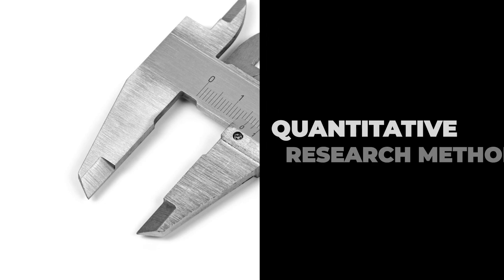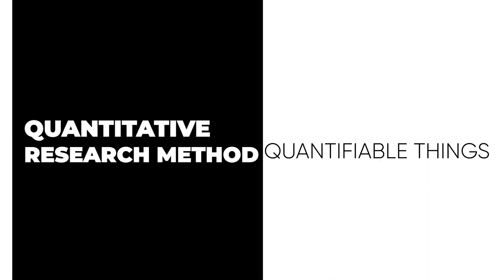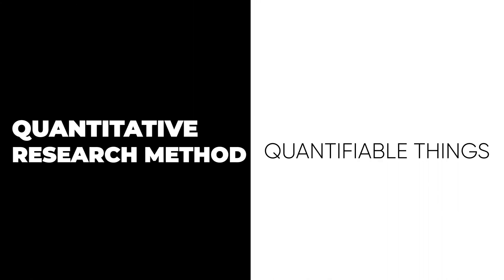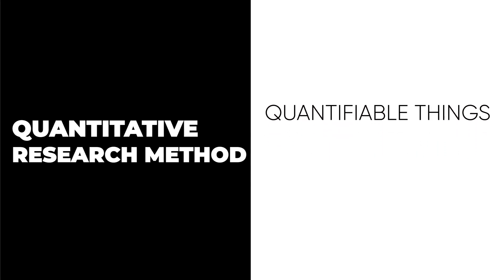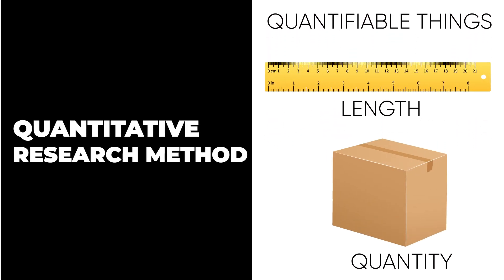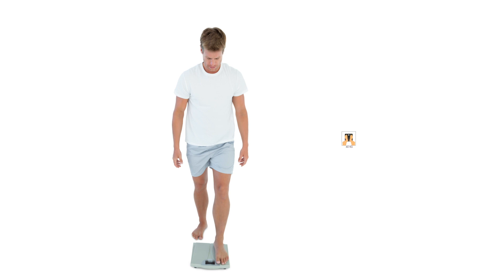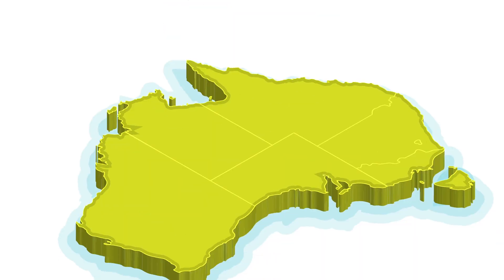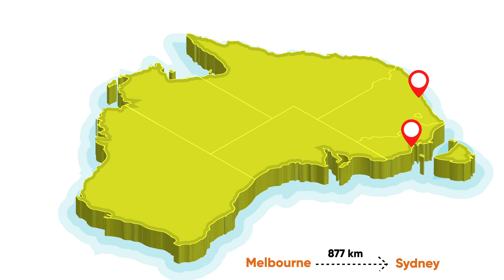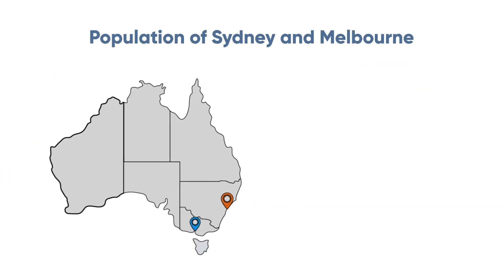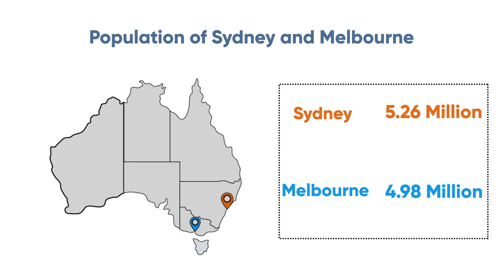Let's talk about the quantitative research method. This method measures quantifiable things which can be measured using different methods, for example length, quantity, etc. As they are objective data, we cannot argue with them. For example, the weight of this person is 60 kg, the distance from Sydney to Melbourne is 877 km, Sydney has a population of 5.26 million and Melbourne has a population of 4.98 million. These are all quantifiable and have certain value, so we cannot argue with them.